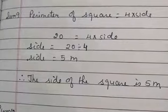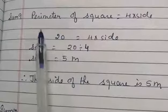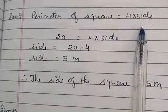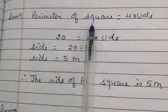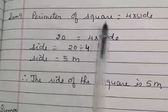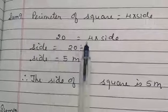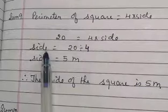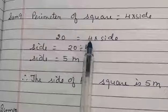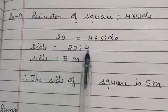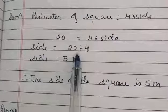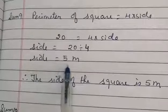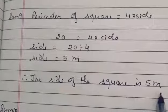Solution for question number 9. The perimeter of the square = 4 × side. The perimeter given is 20, so we write: 20 = 4 × side. To find the side, we divide 20 by 4. Side = 20 ÷ 4 = 5. Therefore, the side of the square is 5 meters.